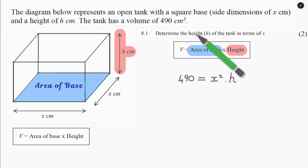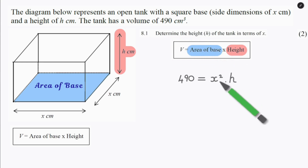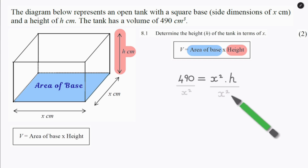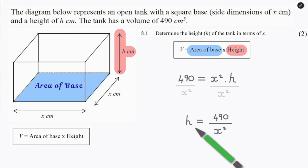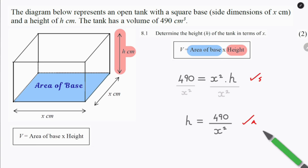Now, to determine the height means to get it on its own. So we want to get rid of this x squared by dividing both sides by x squared. They cancel, and we are left with an expression for height: 490 over x squared. That successfully answers the question, and your two marks are earned from substitution as well as the correct answer.